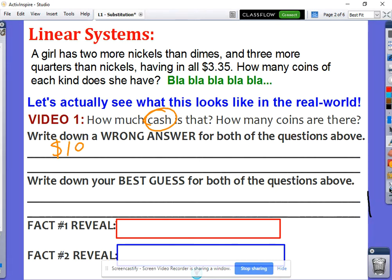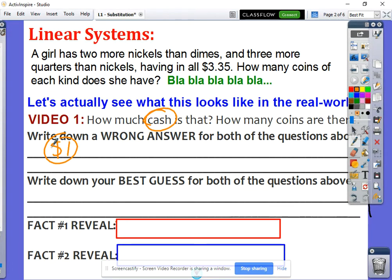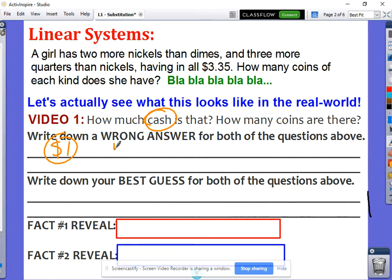So write down an answer that you know is wrong. For example, I know that it was more than a dollar, so I know that a dollar is definitely wrong. Okay, I also know that it probably wasn't a thousand dollars, so an answer that is wrong would be probably one dollar or one thousand dollars. Either one of those would be the wrong answer.